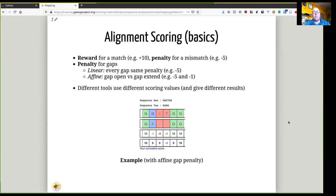And we can either use linear gaps where every gap gets the same penalty, but more often we use affine gaps where opening the gap costs a lot, but extending the gap is much cheaper than initially opening it, but while still being negative. Different tools use different scoring values and give different results.